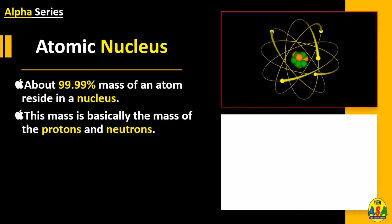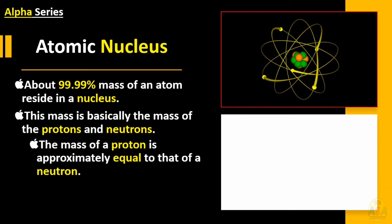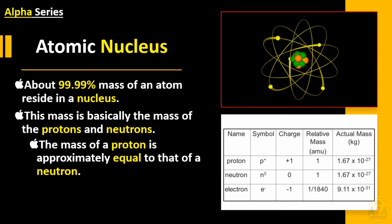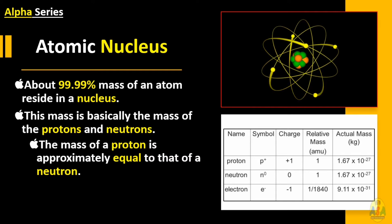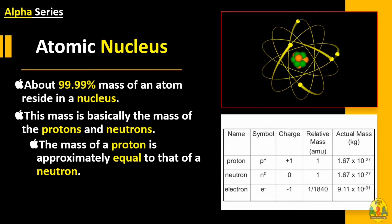Another point: the mass of a proton is approximately equal to that of a neutron. Look at the table. The last column clearly shows that the mass of proton and neutron are approximately equal.